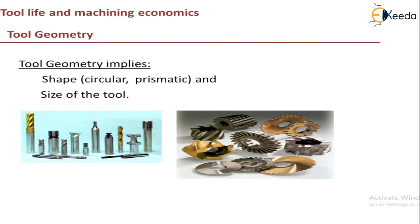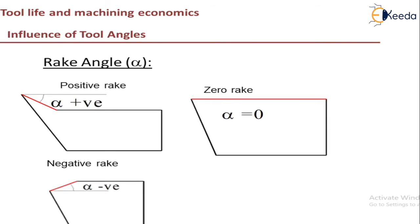So tool geometry, what it implies, the size, the shape of the tool, the size of the tool, that is what tool geometry means. And then, let us discuss about rake angle. So as you can see, the rake angle is positive here and then negative. As you can see, the positive and negative rake angles are given here. So this is positive rake angle and this is negative rake angle and this is zero rake angle.